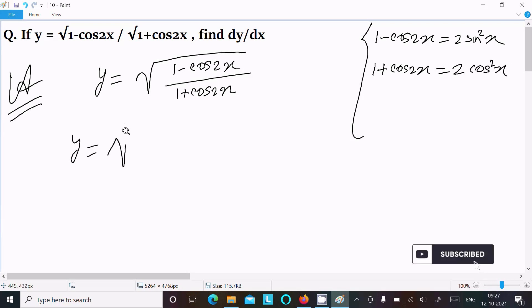And this we can write 2 cos squared x. The 2s cancel and now we can write y equals under root sin squared x by cos squared x.